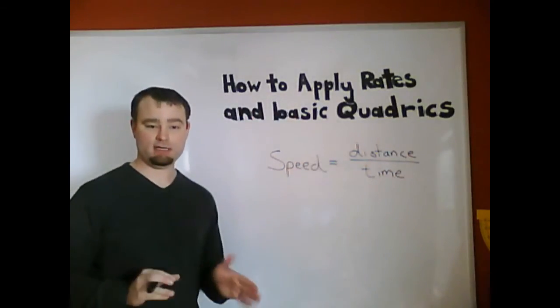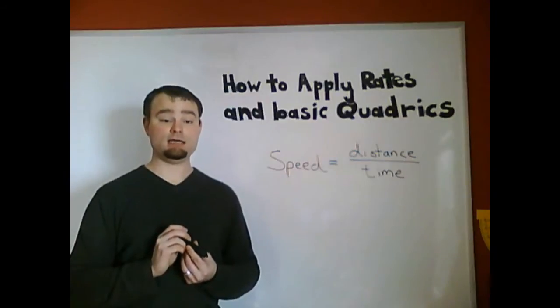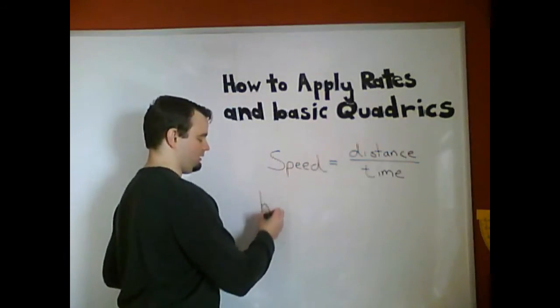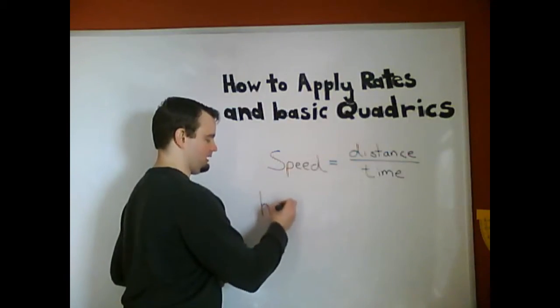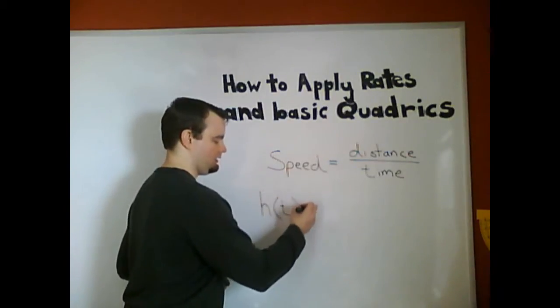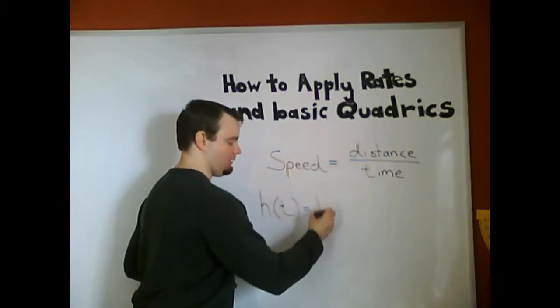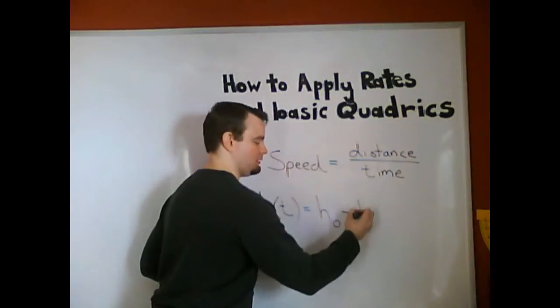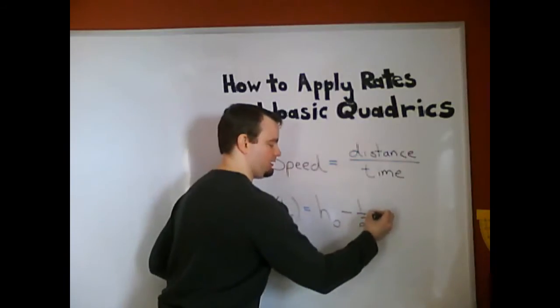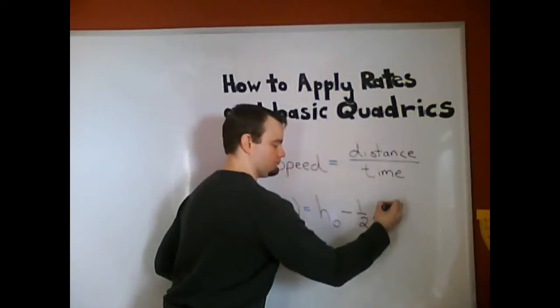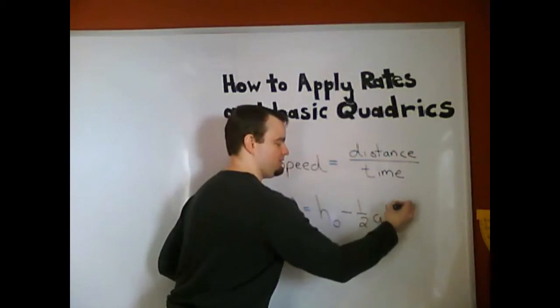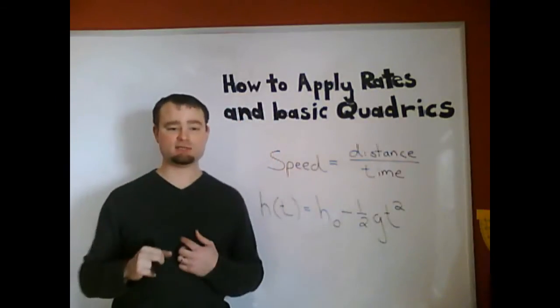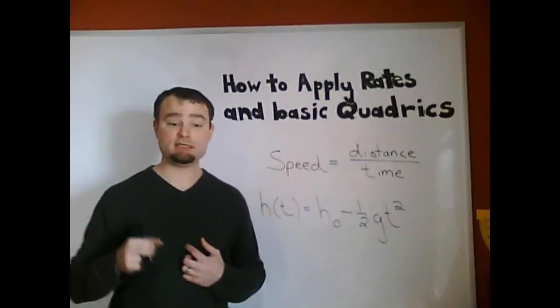This is the rates part of our lesson. The second idea we're going to use is that the height of an object at a given time equals the object's original height minus the pull of gravity over time. Now gravity is an acceleration. We learned that. That's why that's squared. You've seen this formula before, so let's get to it.